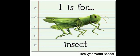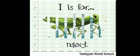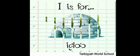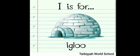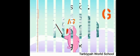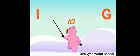I is for insect. Repeat: insect. I is for igloo. Repeat: igloo. Now see two letter words by using vowel I. I is for igloo.